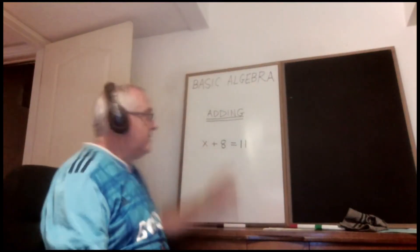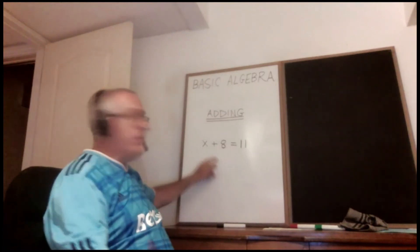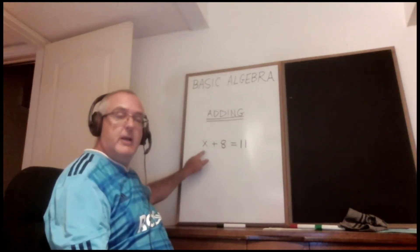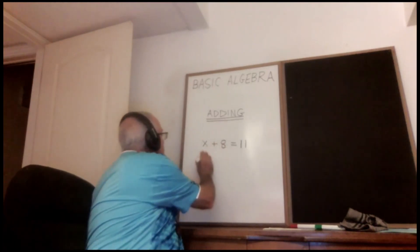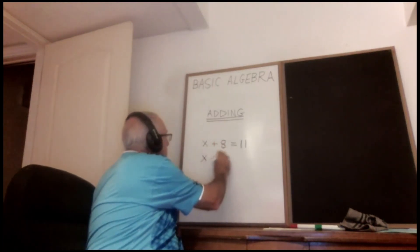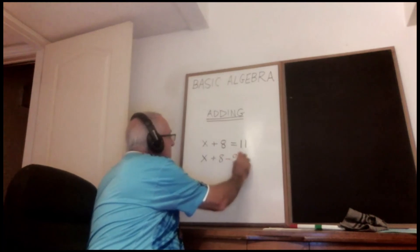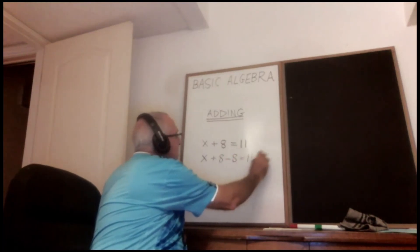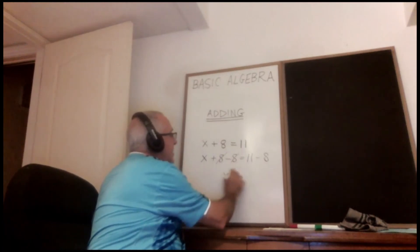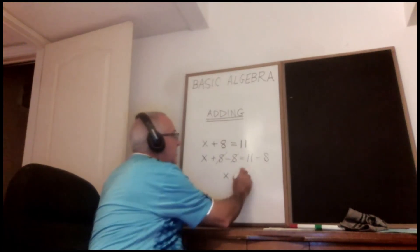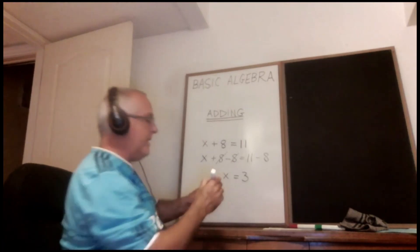So I guess we can do this original problem now. I want my x to be alone. It has an 8 being added to it so I'll subtract an 8 from both sides. These cancel. My x is alone and it's equal to 11 minus 8 which is 3. I have my answer.